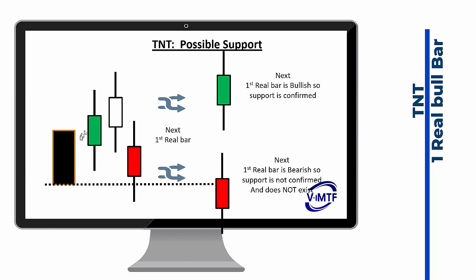If you have a situation where only one real bar broke the TNT high, that makes it a possible support. But if followed by a fake bar, you have to come back and test this level to determine if it will hold as support. You need to test and hold it. If price came and broke right below it, this TNT low is not a support at all. Once it tests and holds, you wait for the next real bar — if it's bullish, this is confirmed as support; if it's bearish, this is no longer support at all. This is the same process as IMTF, but applied to the low of the TNT when you break the high.